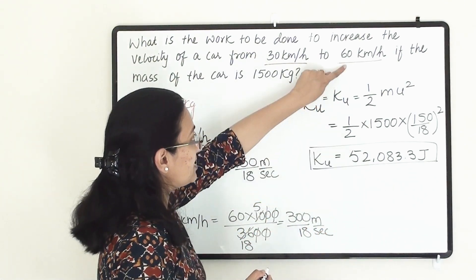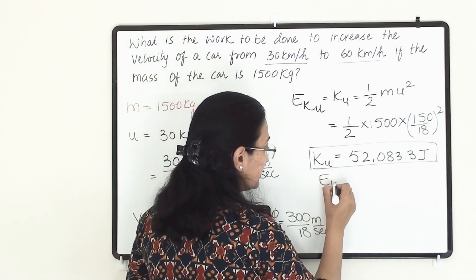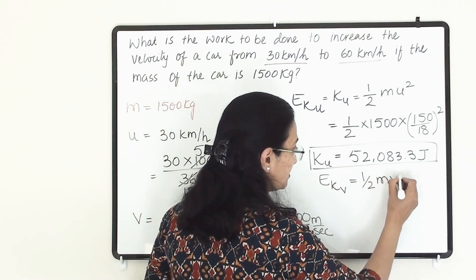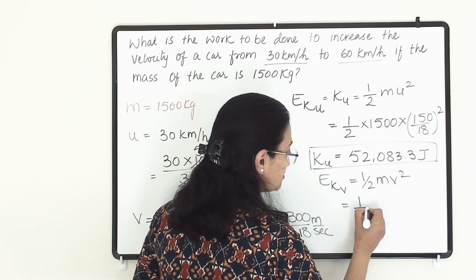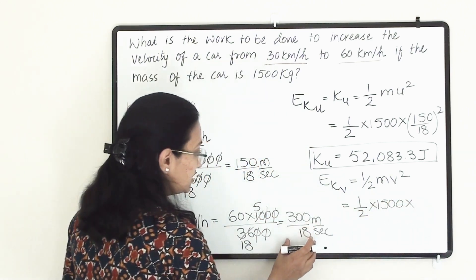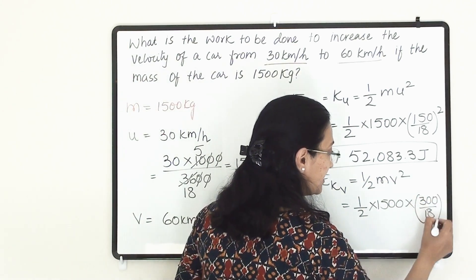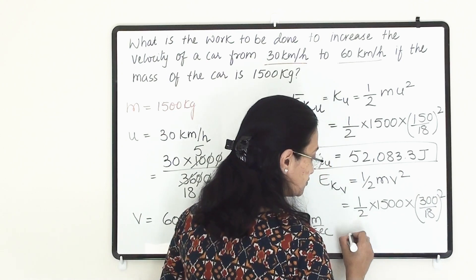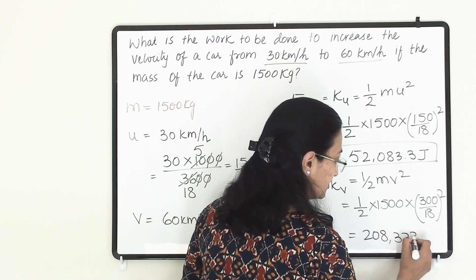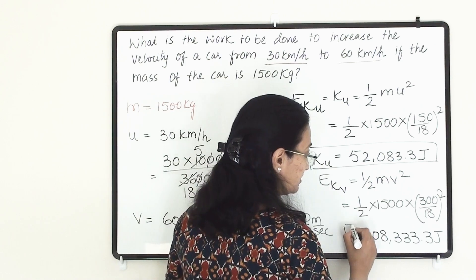Now similarly we have to find the final kinetic energy. So KE_final = ½ m v² = ½ × 1500 × (300/18)² = 208,333.3 joules. This much is the final kinetic energy.